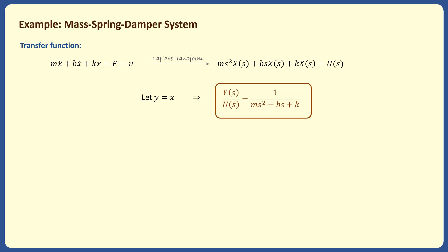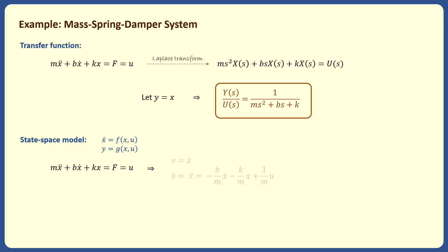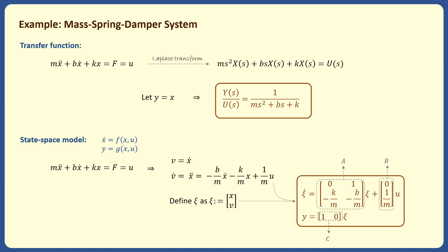We finally represent the dynamical model using the third method, which is the state-space modeling. The idea behind state-space modeling is very simple: we just need to write the nth order ODE model of the system as n first order ODEs. This will help us represent any dynamical system in a unified way. If we define v as v equals x dot, we can rewrite the second order ODE model of this system as two first order equations, which are v equals x dot and v dot — which is actually x double dot — equals minus b over m times x dot minus k over m times x plus 1 over m times u. We define a 2 by 1 vector psi, which is called the state vector, and rewrite the two equations as a single equation in the form of psi dot equals A psi plus B u.